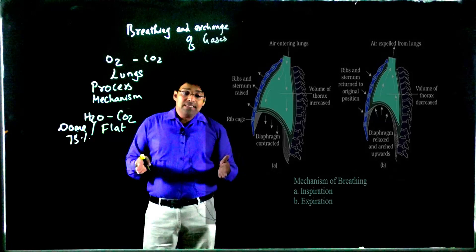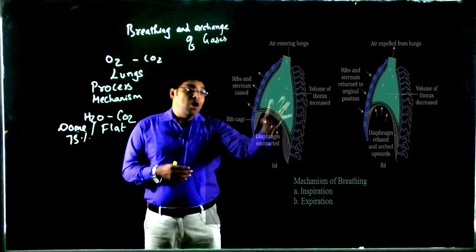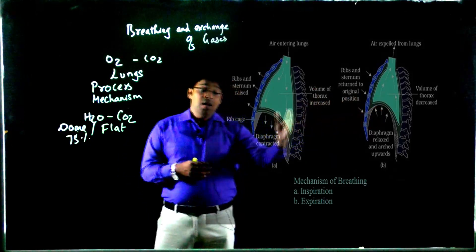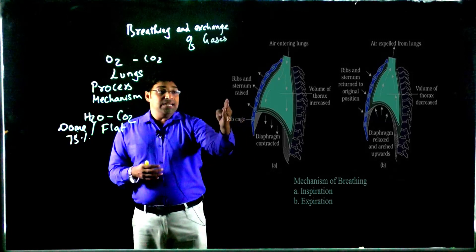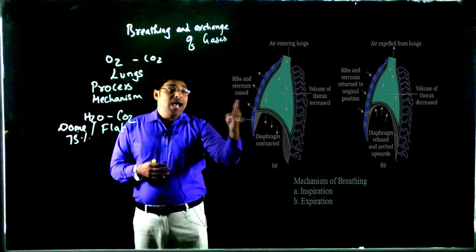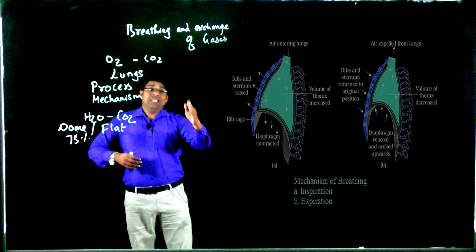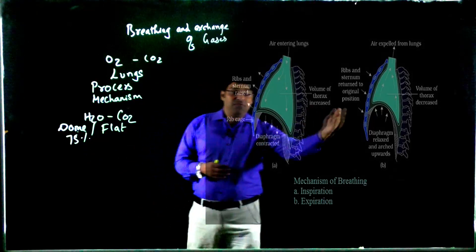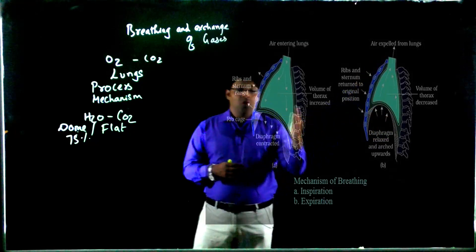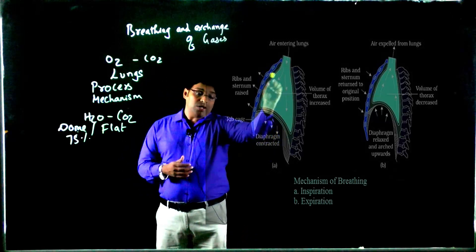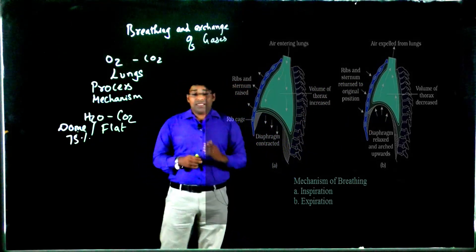In the inspiration diagram, the thoracic cavity volume is increased. The diaphragm pulls the lungs downward, and the external intercostal muscles move the lungs anteriorly and outwardly. As a result, the volume of the thoracic cavity is increased and pressure is decreased — that is the process of inspiration. The exact vice versa is expiration: the diaphragm relaxes, the internal intercostal muscles bring the lungs to the original position, and air moves out. In expiration, the thoracic volume is decreased and pressure is increased.